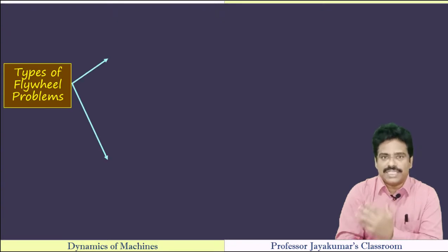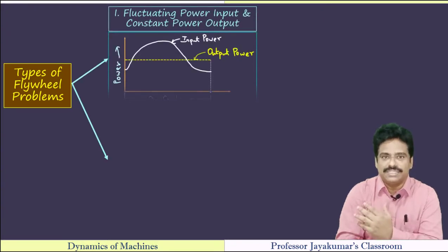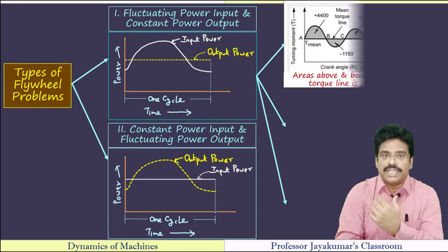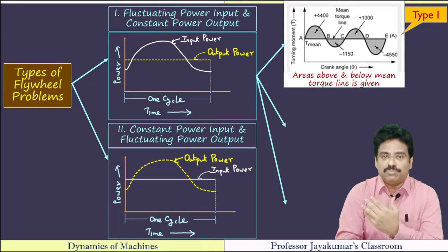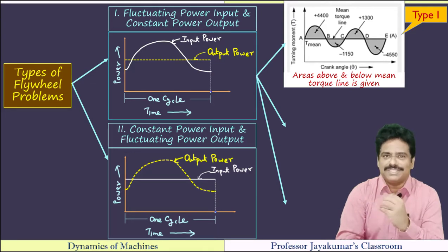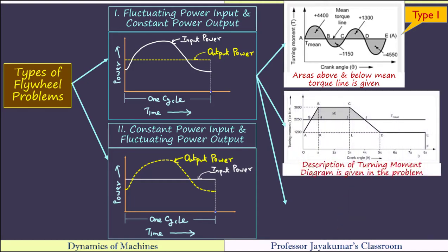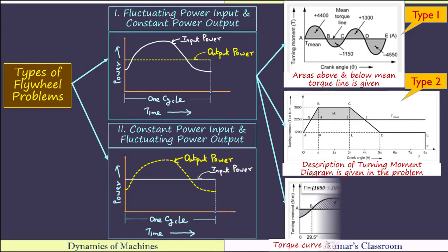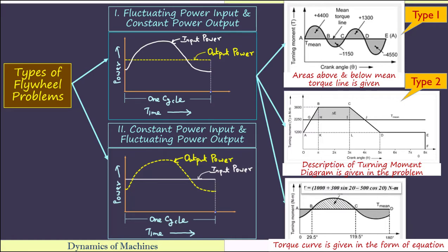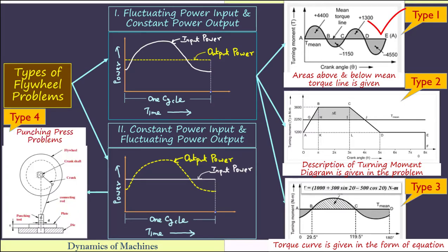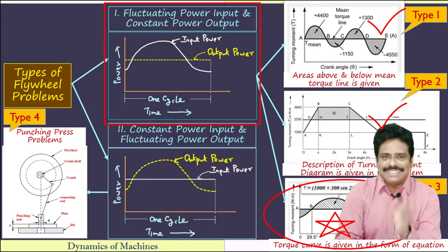This video is in continuation with our earlier videos. For simplicity, we have classified the flywheel problems under two categories. The first category of flywheel problems can be classified under three types. In Type 1, the turning moment diagram is given in the form of areas above and below the mean line. In Type 2, the description of the turning moment diagram is given. In Type 3, the turning moment curve is given in the form of mathematical equations. Having solved Type 1 and Type 2 numerical problems in our earlier videos, in this video we are going to solve a Type 3 problem.